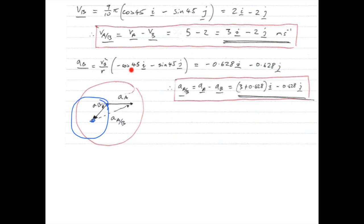And again, the component's minus cos 45i, because it's going backwards at 45. It's going towards the centre of the circle, and the i and j is still in this direction. So minus 45i direction, and minus sin 45 in the j direction. So the vector of the acceleration of B towards the centre of the circle is minus 0.628i minus 0.628j.